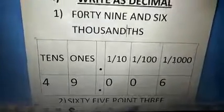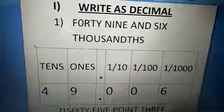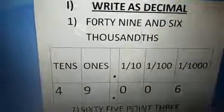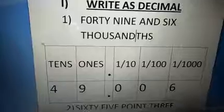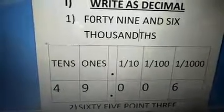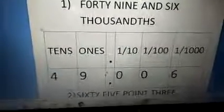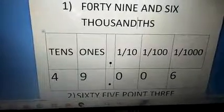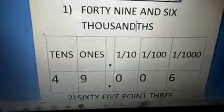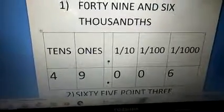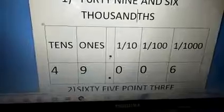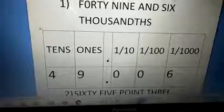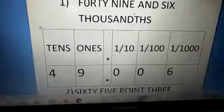Next, we need to place the numbers in the chart. 49 — so 4 tenths and 9 hundredths. Children, you should listen carefully. This is the decimal point — you should place the decimal point. Last class you all wrote the place value chart well, but you forgot to keep the decimal point. This is very important — don't forget to keep the decimal point.